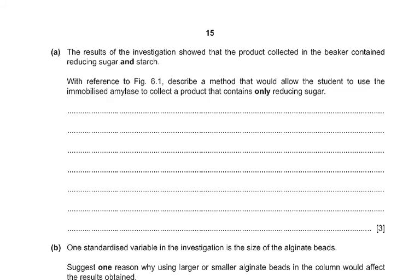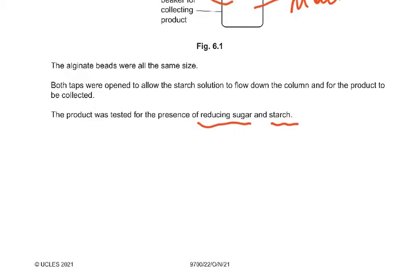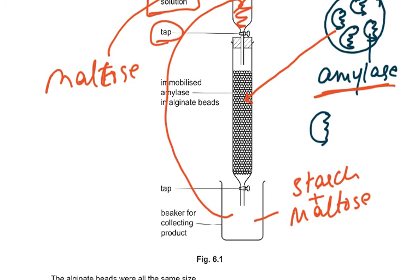The result of the investigation showed that the product collected in the beaker contained reducing sugar — which is maltose — and starch. With reference to figure 6.1, describe a method that would allow the student to use the immobilized amylase to collect a product that contains only reducing sugar. If you actually think about doing it, only then can you think of ideas for eliminating the starch and keeping only maltose.